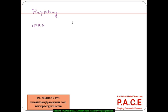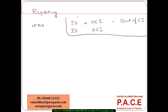As per IFRS, the income statement plus other comprehensive income can be combined together and called the statement of comprehensive income. Either they can be combined or the income statement and other comprehensive income can be presented separately. Either presentation format is acceptable. A few other accounting standards like U.S. GAAP also follow similar presentation mechanisms.